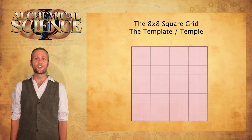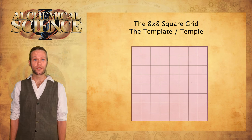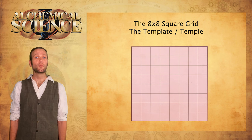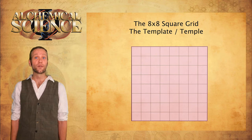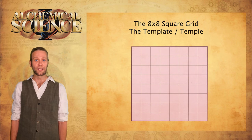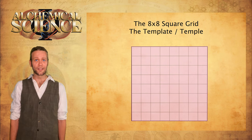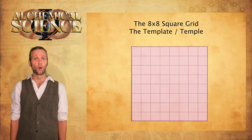The 8 by 8 square grid, the template temple. Let's now move on to explore the 8 by 8 grid itself. This is where we come to talk about the doubling and tripling sequences, the biggest secret and the most profoundly simple part of the system of mathematics, which was self-evidently employed by many advanced civilizations around the ancient world.